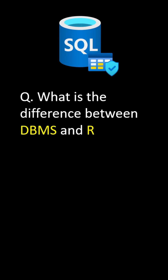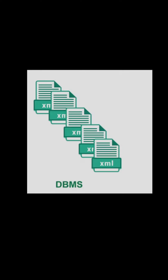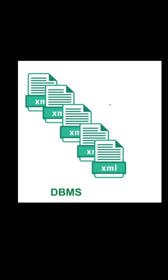What is the difference between DBMS and RDBMS? DBMS stores data as files — for example, data is stored in XML files. Different data are stored in different files and no relationship is maintained between them.